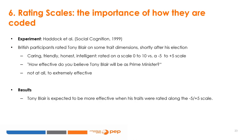A very essential part of survey design is how rating scales are coded. British participants were asked to rate Tony Blair on traits — caring, friendly, honest, and intelligent — on a scale from 0 to 10 versus a scale from minus 5 to plus 5. Then they were asked how effective they believed Tony Blair would be as Prime Minister. Results indicate respondents thought Blair would be more effective when traits were rated along the minus 5 to plus 5 scale.